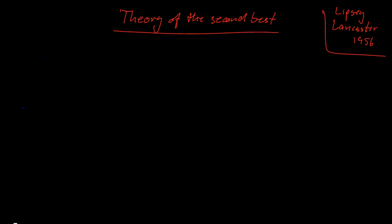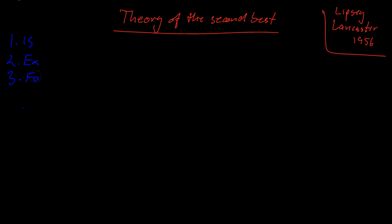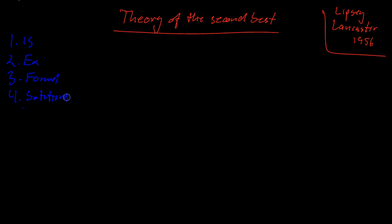I'm going to explain the theory of the second best using five points. First, I want to say what it is. The second thing is to give some examples. The third thing is to provide a formal solution. The fourth thing will be to discuss some of the solutions to the problem, and the fifth thing will be a summing up.